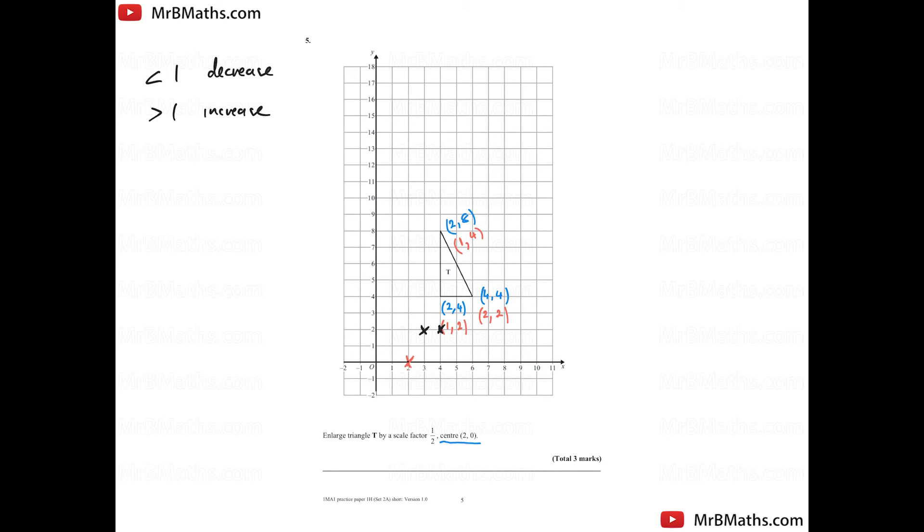And this one up here is one, four. So one away from two, zero and four up. If I connect that up now, there's my new triangle.